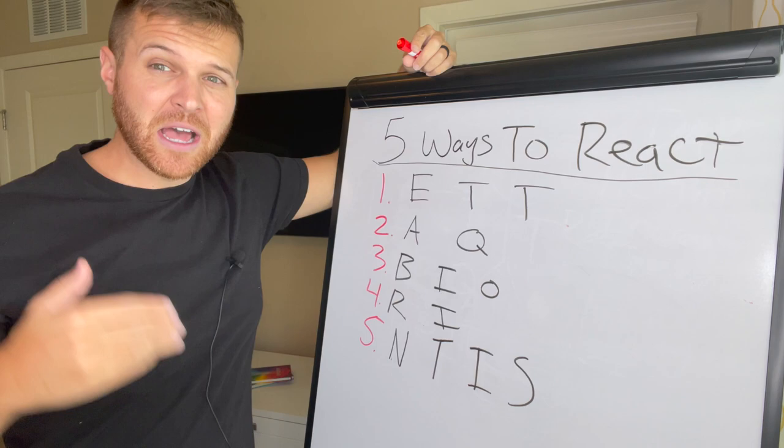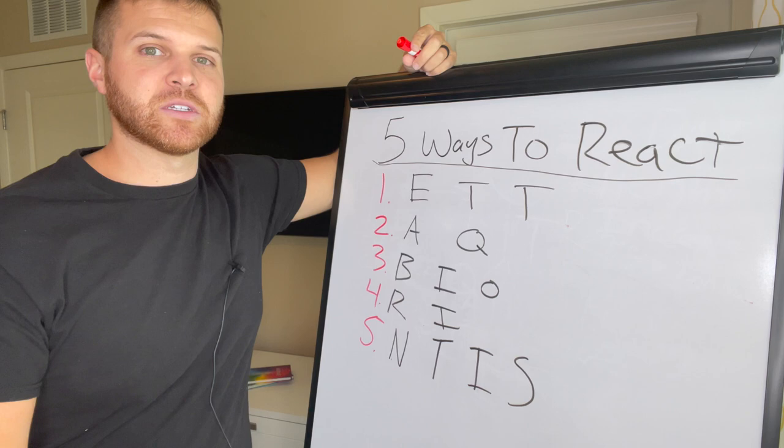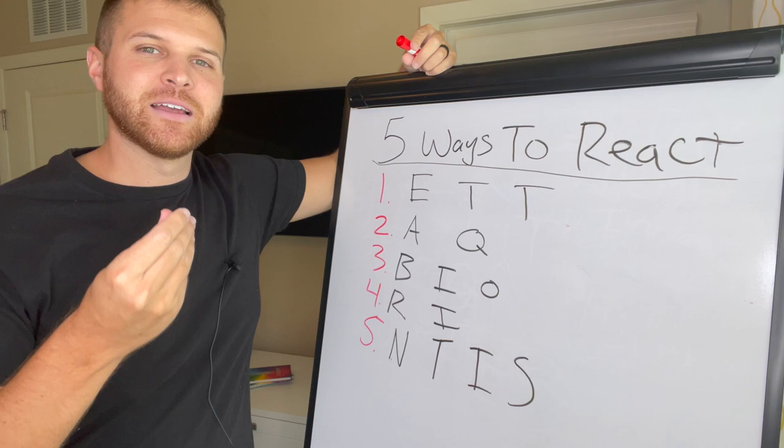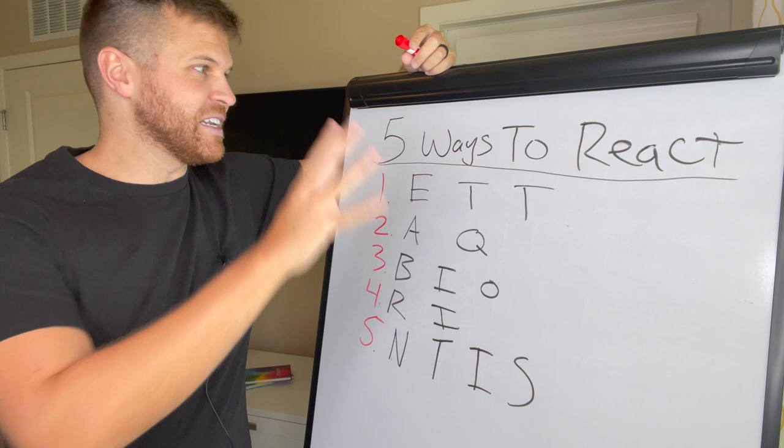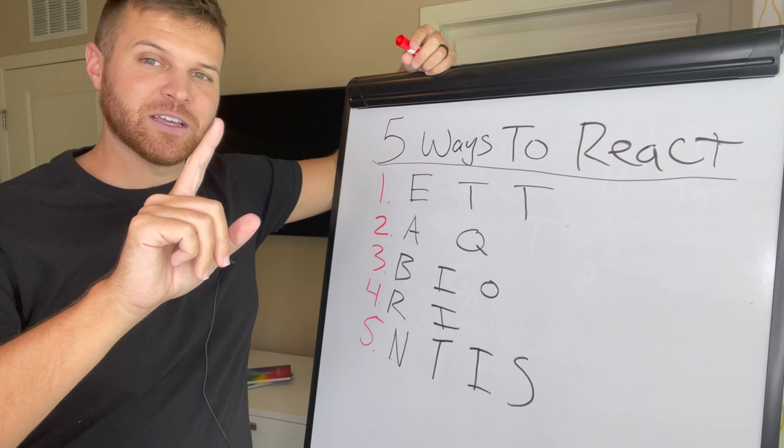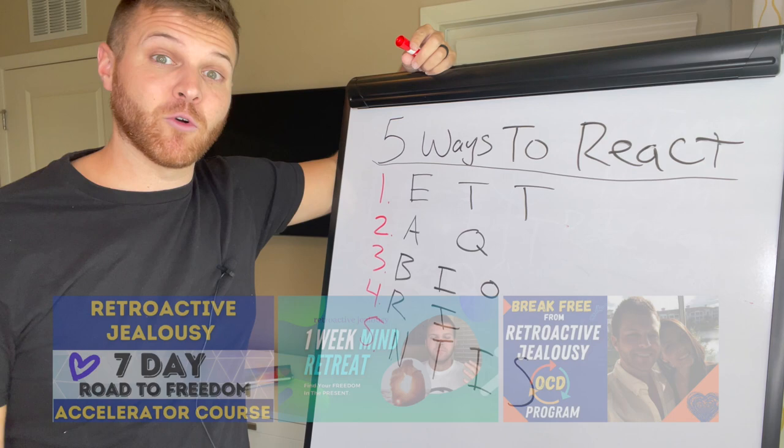We're going to go through five of the most common ways that people will react to retroactive jealousy thoughts, to OCD thoughts, so you can get a handle on maybe where you are at as far as how your reactions are, and maybe some changes you need to make in order to really start putting in the work to overcome these OCD thoughts of your partner's past. The more practice we put in, the more work we put in every single day, even when we don't feel like it, we gain so much power and we really start to loosen RJ's grip on us. If you need more help in overcoming retroactive jealousy, check out the links in the description below.